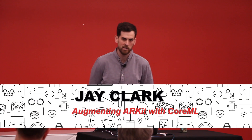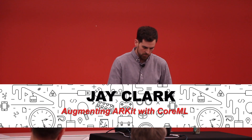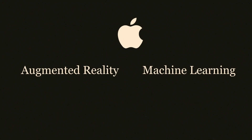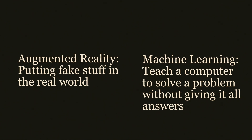Today I'm going to be talking about augmenting ARKit with CoreML. ARKit and CoreML are Apple's augmented reality and machine learning frameworks. Augmented reality is putting fake stuff in the real world, and machine learning means a lot of things, but it usually means teaching a computer to solve a problem without giving it all of the cases it's going to experience. I'm going to be talking about how to improve putting fake stuff in the real world by teaching a computer how to help you.